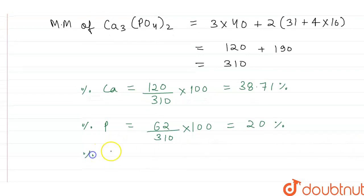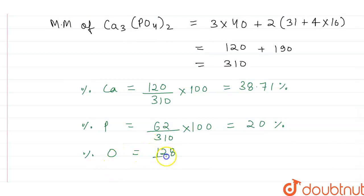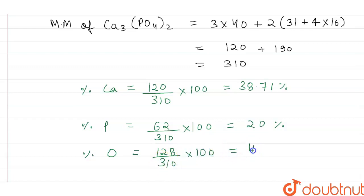Mass percent of oxygen = mass of oxygen (128) ÷ molecular mass of calcium phosphate (310) × 100 = 41.29%.